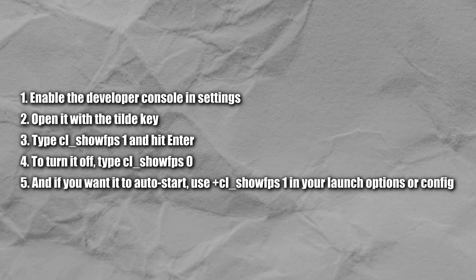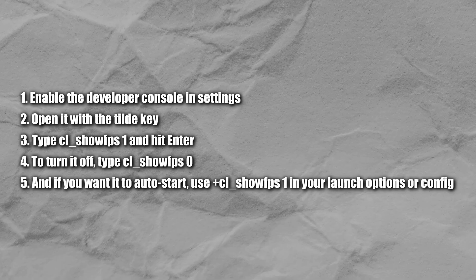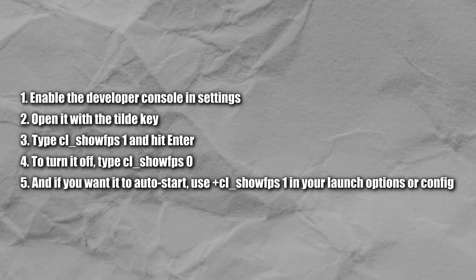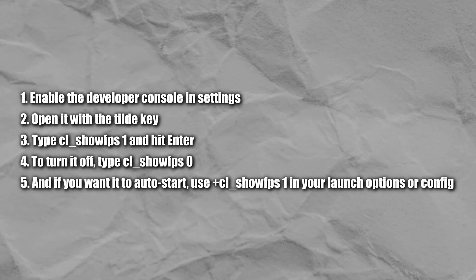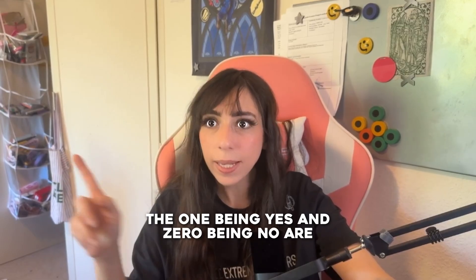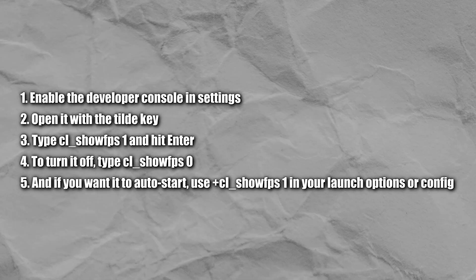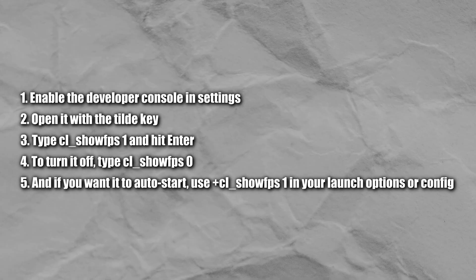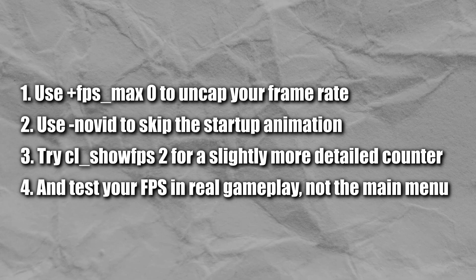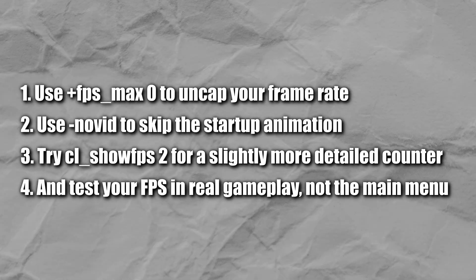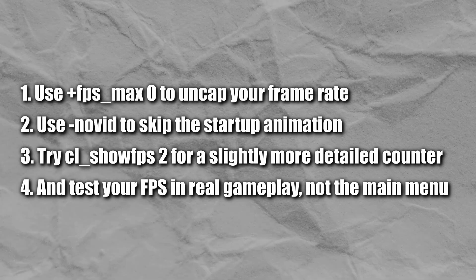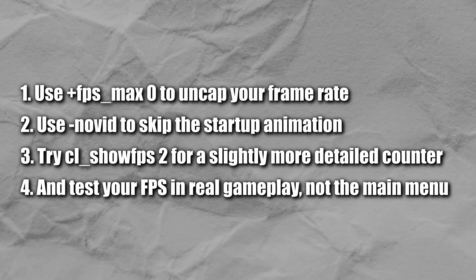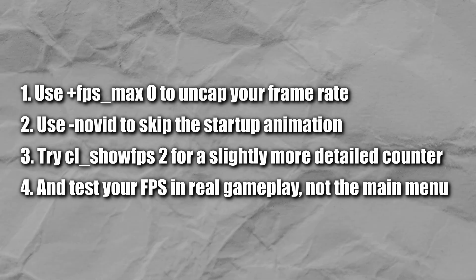Let's recap: to show your FPS in CS2, enable the developer console in Settings, open it with the tilde key, type cl_showfps 1 and hit Enter. To turn it off, type cl_showfps 0. Remember — 1 means yes, 0 means no. If you want it to auto-start, use +cl_showfps 1 in your launch options or config. Bonus tips: use +fps_max 0 to uncap the frame rate, use -novid to skip the startup animation, try cl_showfps 2 for a slightly more detailed counter, and always test your FPS in real gameplay — not the main menu.